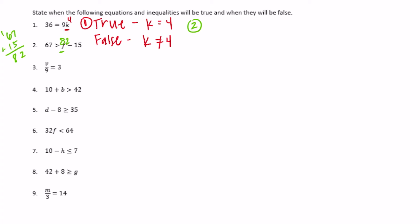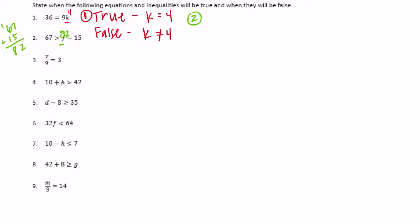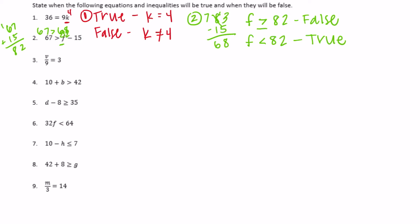For example, if we did 83 minus 15, that would be 68, and 67 greater than 68 would not be true. So if f is greater than 82, it is false. If f is less than 82 it will be true. Actually, if f is greater than or equal to 82 it would be false, because 67 is greater than 67 is not true.